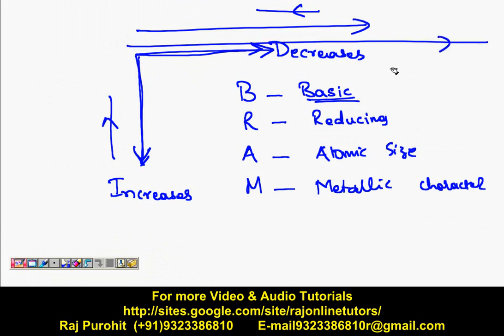Okay so when you go from left to right like this in the periodic table, the basic nature decreases, atomic size decreases, and even metallic character or metallic nature decreases.